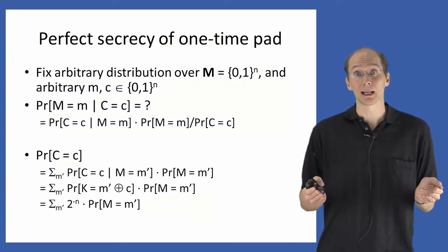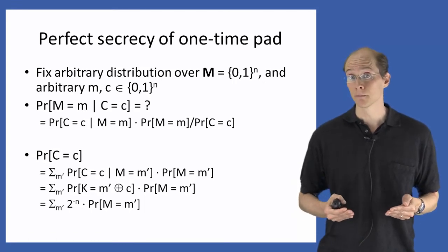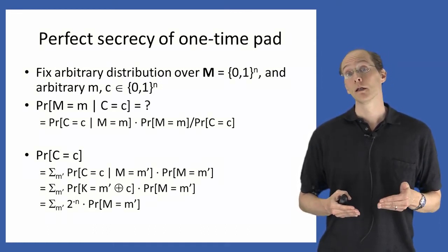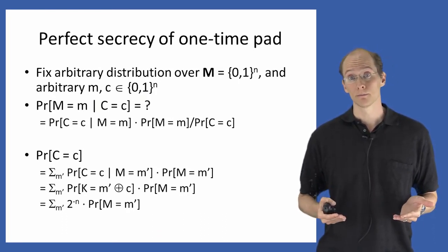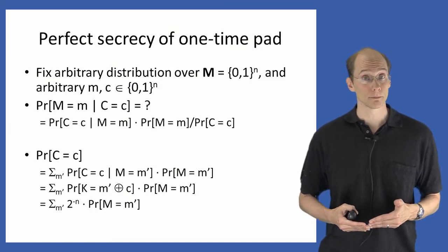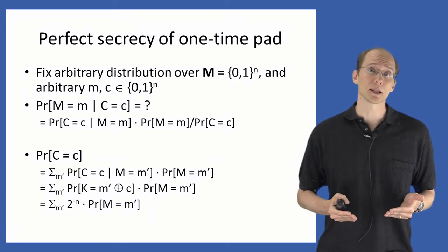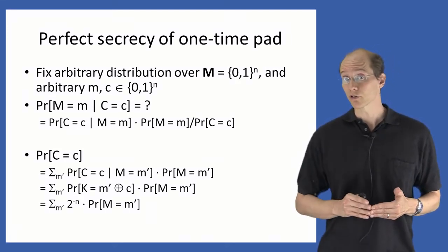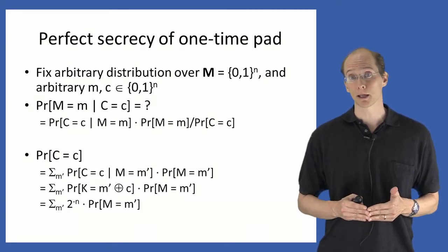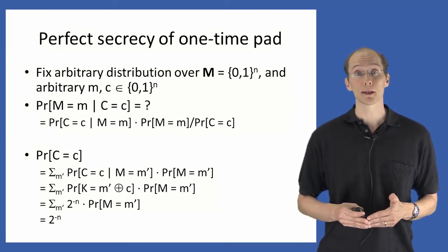The probability that the key equals the fixed string m' XOR c is straightforward: m' XOR c is just some fixed n-bit string, and the one-time pad chooses the key uniformly from all n-bit strings, so the probability the key takes any particular value is exactly 2^(-n). We've reduced the probability that the ciphertext equals c to the summation over all messages m' of 2^(-n) times the probability the message equals m'. Since probabilities must sum to 1, this expression reduces simply to 2^(-n). The probability that the ciphertext takes on any particular value c is exactly 2^(-n).